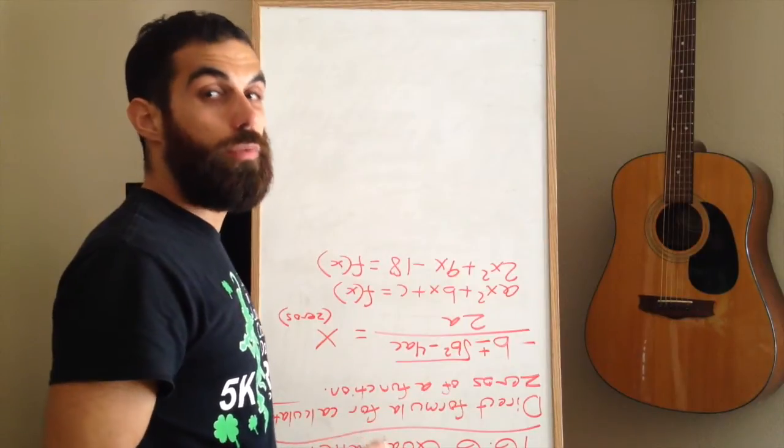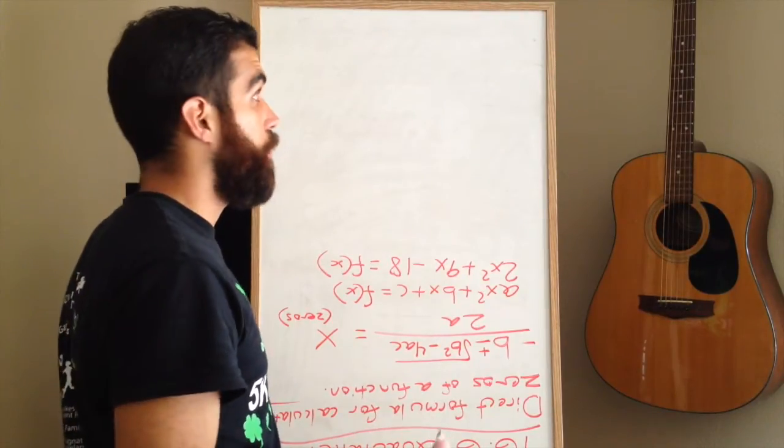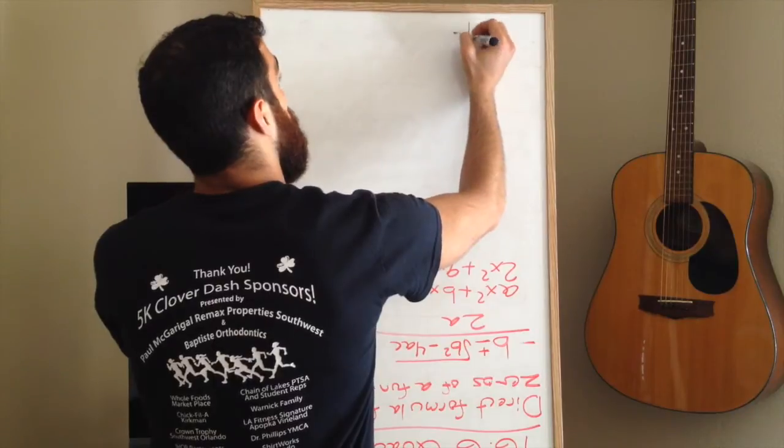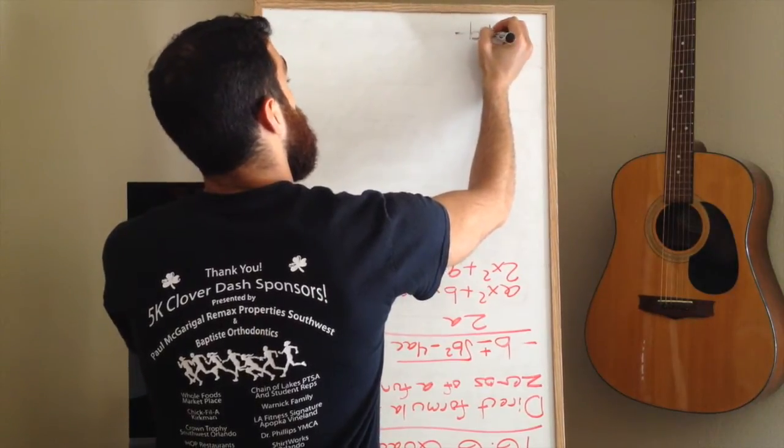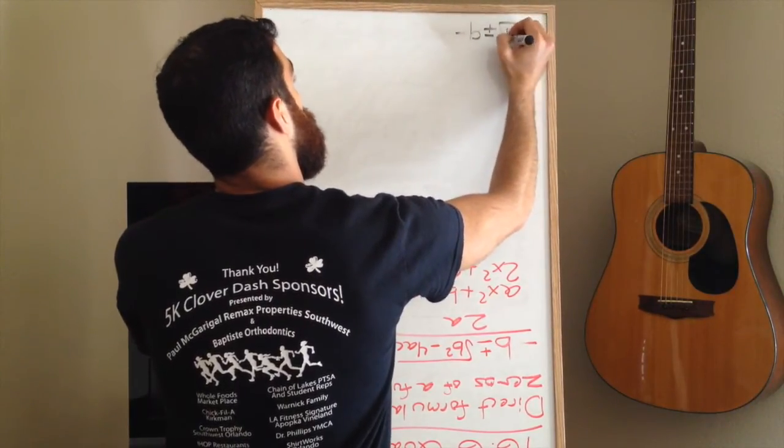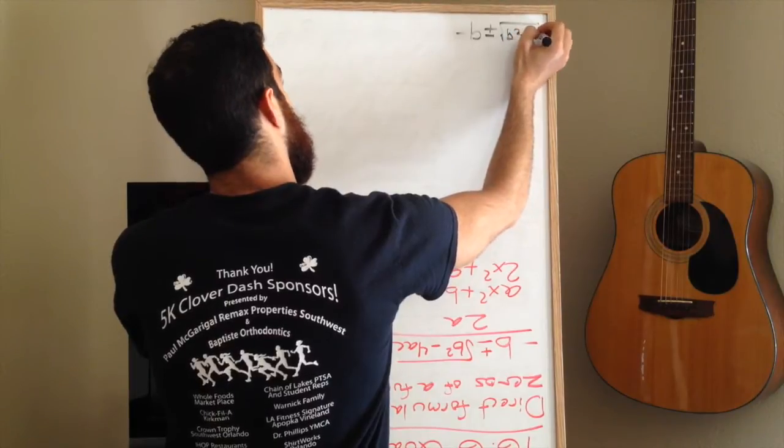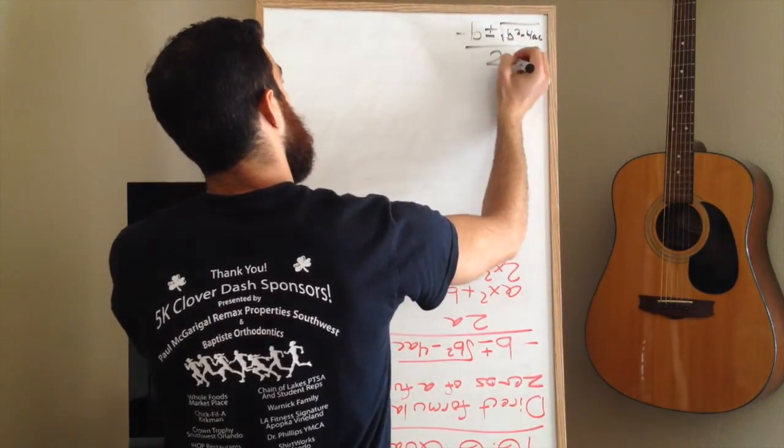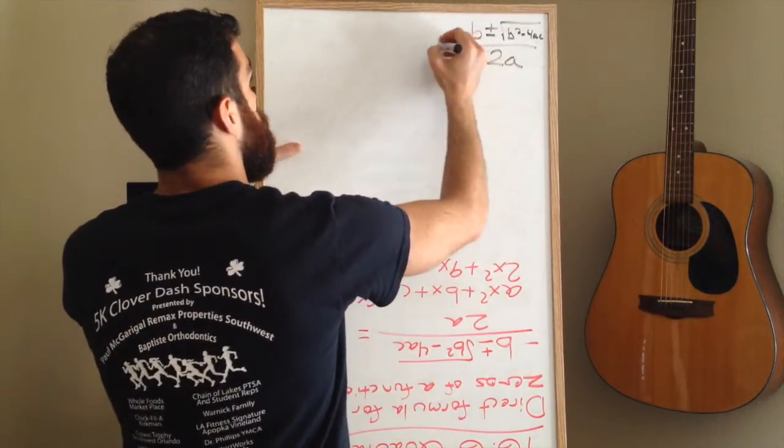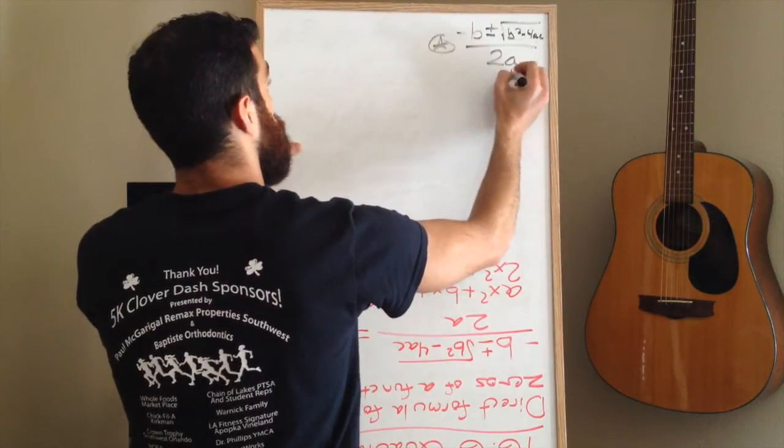Again, you want to write down the quadratic formula so that you're memorizing it. Write it down if you haven't done so again. Negative b plus or minus the square root of b squared minus 4ac all over 2a. Star it somewhere on your paper. You need to have it memorized.